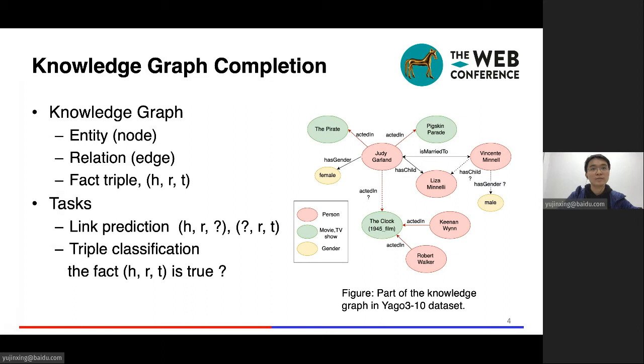Knowledge graphs organize human knowledge in a graph structure. The nodes are entities, while the edges are relations between the entities. We use HRT to denote the fact triple: head entity, relation, and tail entity. The link prediction task is to answer two types of queries, predict the tail entity or predict the head entity. The triple classification task is to predict whether the fact triple is true or false. Knowledge Graph Embedding, also known as KGE, methods find appropriate embeddings for entities and relations, and appropriate math computations for logical reasoning.